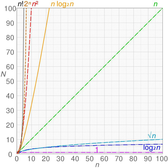An algorithm is said to take logarithmic time when T(n) = O(log n). Since log_a(n) and log_b(n) are related by a constant multiplier, and such a multiplier is irrelevant to big O classification, the standard usage for logarithmic time algorithms is O(log n) regardless of the base of the logarithm. Algorithms taking logarithmic time are commonly found in operations on binary trees or when using binary search.